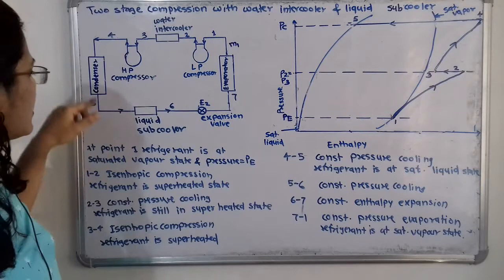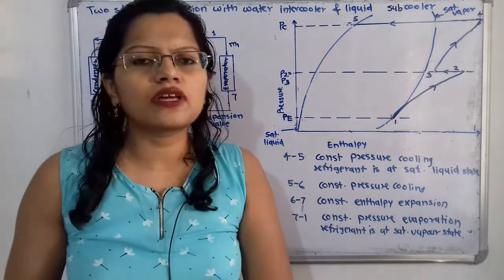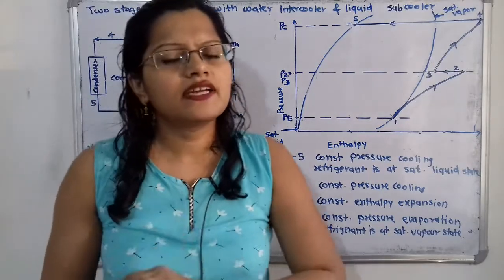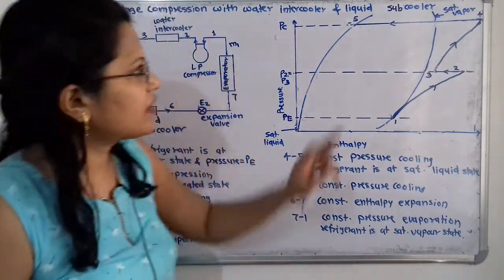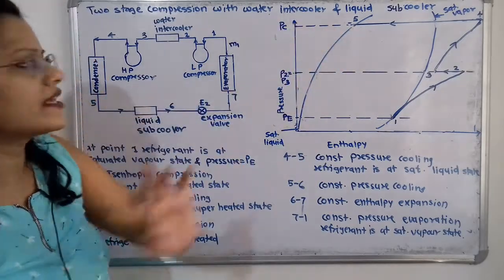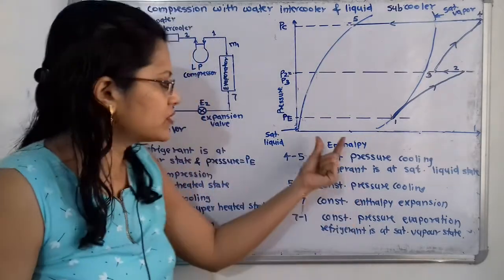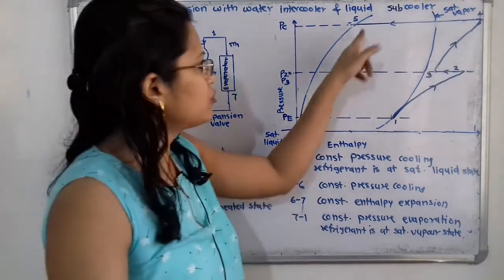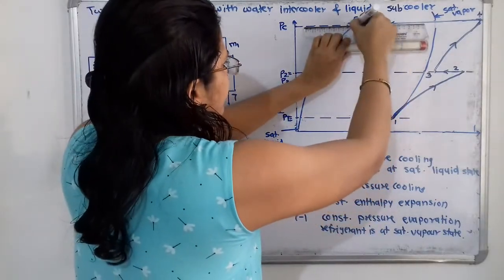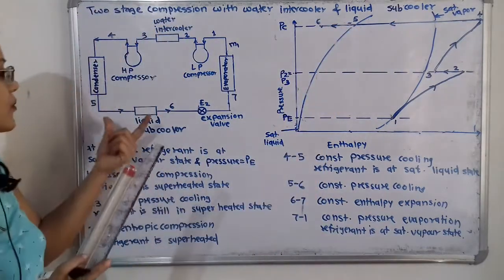At point 5 the refrigerant moves to the liquid subcooler. In the liquid subcooler, further cooling of the liquid refrigerant takes place, so temperature decreases. This is constant pressure cooling beyond the saturated liquid line, meaning enthalpy decreases further. We show this decrease in enthalpy as process 5 to 6, marking point 6 to the left of point 5.